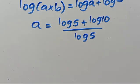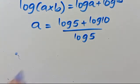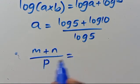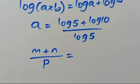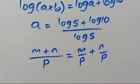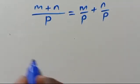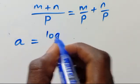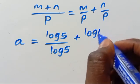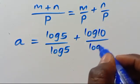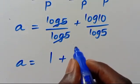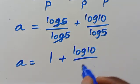So from here, when we have a fraction M plus N over P, we can split it as M over P plus N over P. Applying this, we have A equals log 5 over log 5 plus log 10 over log 5. Log 5 divided by log 5 will be 1, so we have 1 plus log 10 over log 5.